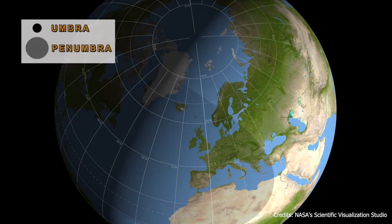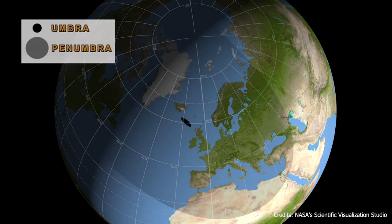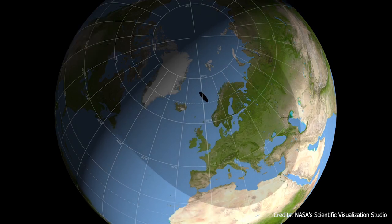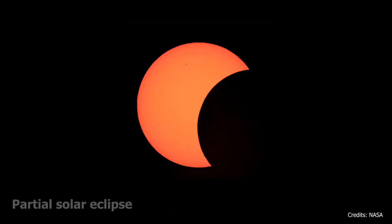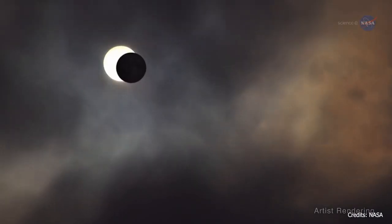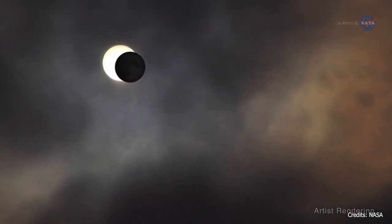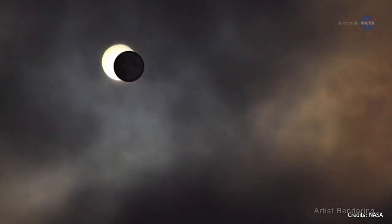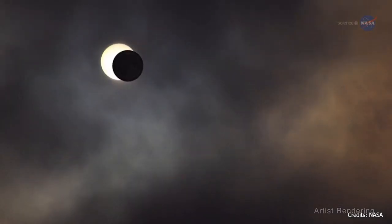If you're standing within the penumbral shadow, outside the Path of Totality, you'll see a partial solar eclipse — the second type. A partial eclipse occurs when the Moon covers only part of the Sun's disk.